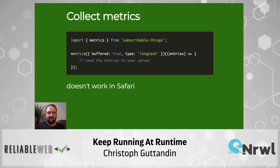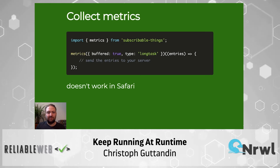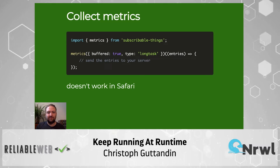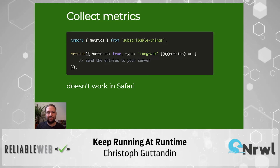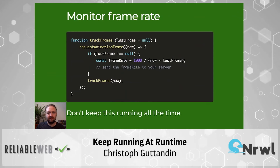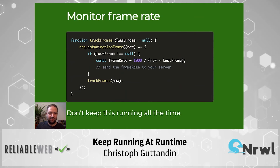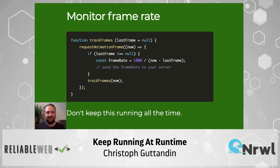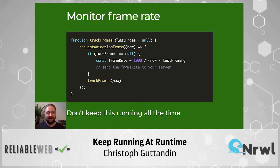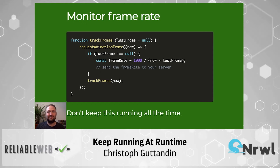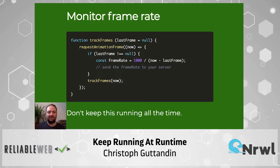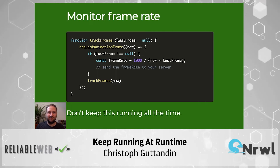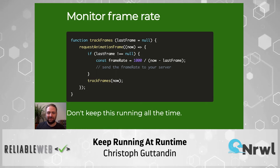That is the same example using the wrapper provided by subscribable-things — it follows the same pattern, wrapping the API in a single function call which returns something that can be subscribed to. Since there isn't an official way to track the frame rate, the next best thing we can do is determine it by computing it ourselves. The example code shown here does that by spinning up an endless requestAnimationFrame loop, keeping on subtracting the previous time from the current time to determine how long it took to prepare the last frame.